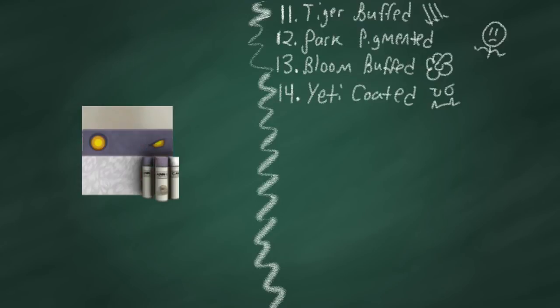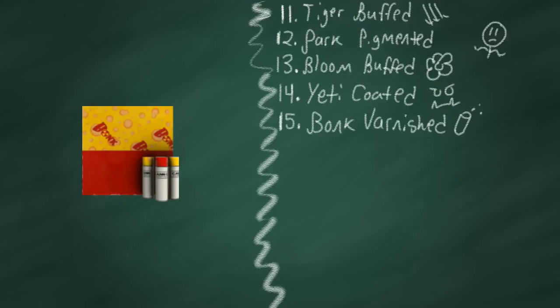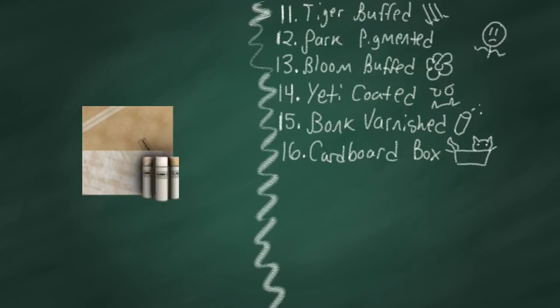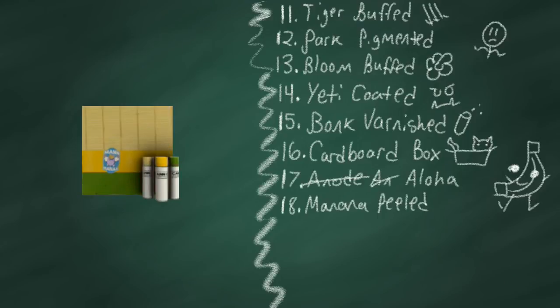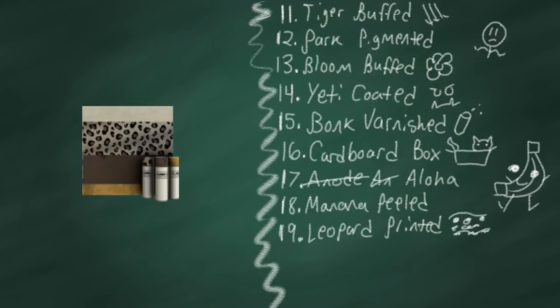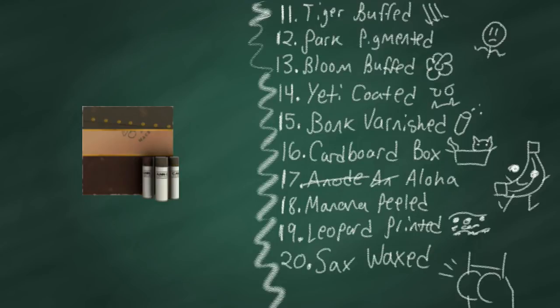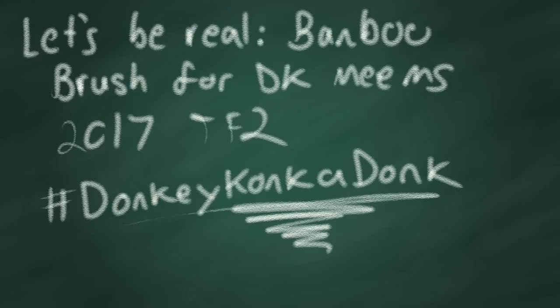3.6% bloom buffed, 3.4% yeti coated, 3.4% bonk varnished, 2.5% cardboard boxed, 1.4% anodized aloha, 1.3% banana peeled, 0.9% leopard printed, 0.8% sax waxed, 0.5% piña polished, 0.5% crock dusted, and 0.5% bamboo brushed.